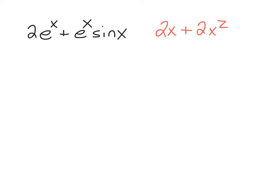So this is just a quick greatest common factor problem, and we have both terms both containing a factor of e to the x, and so then we can take an e to the x out front, and we're left with 2 plus sine of x.